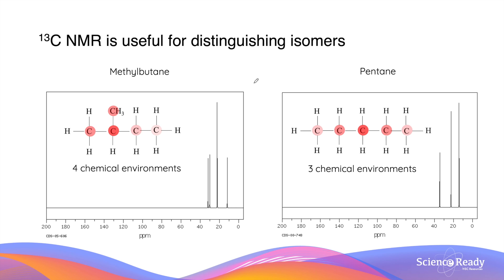Carbon-13 NMR is useful for distinguishing between isomers. A good example is between methylbutane and pentane. These two compounds have exactly the same molecular formula and functional group. Therefore, it is very difficult to use infrared spectroscopy and mass spectrometry to tell these two components apart.